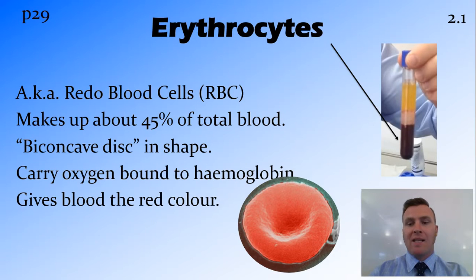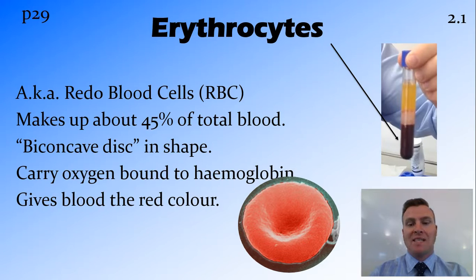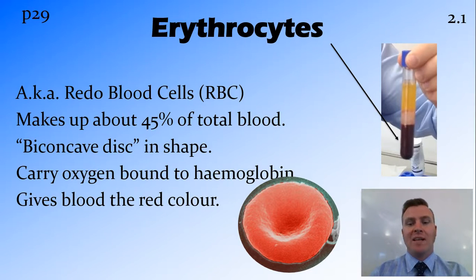Erythrocytes, or red blood cells, make up about 45% of the blood. Their job is to carry oxygen around the body — from the lungs to the body cells where that oxygen is needed. They have the shape referred to as a biconcave disc, which looks like a donut without a hole, or like a hockey puck with the top and bottom squeezed in. This shape is good because it's round with no sharp corners, and the depression in the center means the red blood cell can physically twist, reducing the likelihood of getting stuck in a traffic jam with other red blood cells.